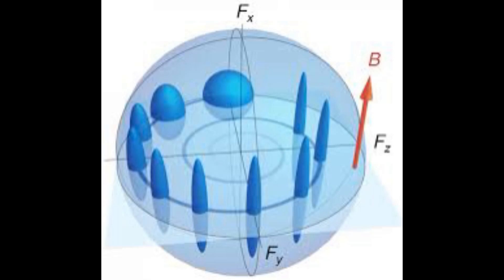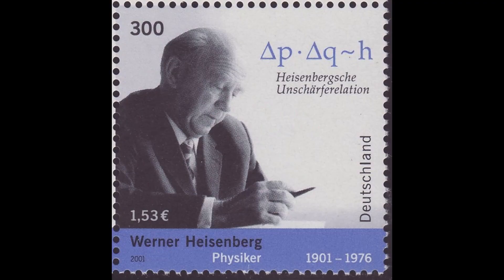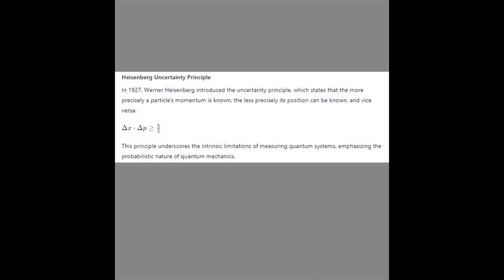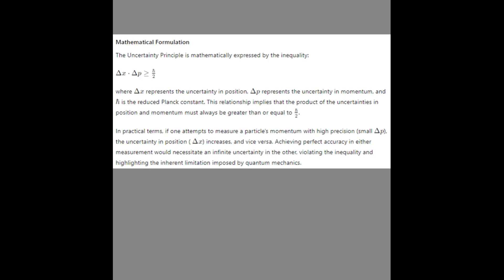When we observe or measure a quantum system, we always disturb its superposition state. This disturbance occurs because the act of measurement itself transfers energy to the system. To measure the position of a particle with high precision, short wavelength, and therefore high momentum light, must be used. This high momentum light transfers a significant amount of energy to the particle, thereby greatly changing its momentum.